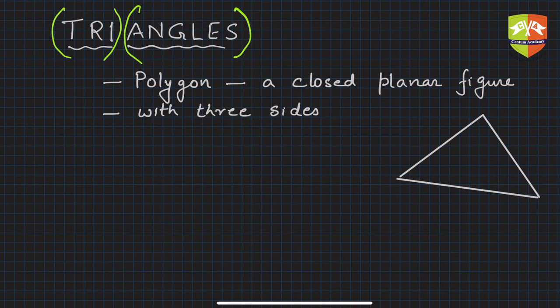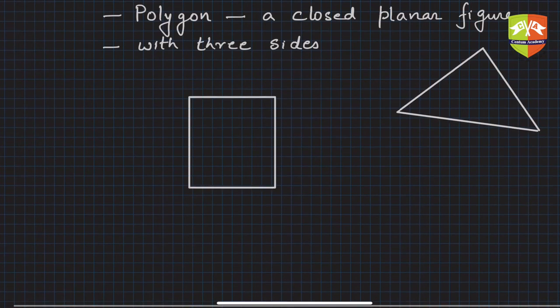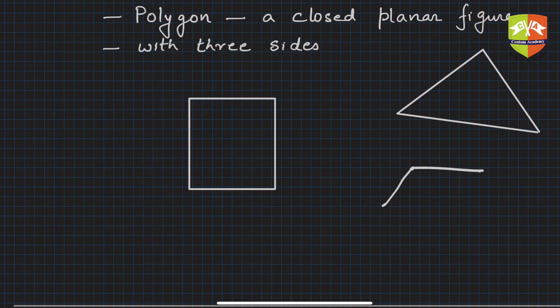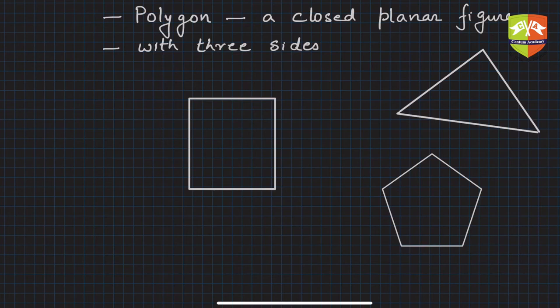This is what is a polygon, and this is actually a triangle. Now you can imagine a polygon with four sides - this is a quadrilateral. Then you can have pentagon with five sides.